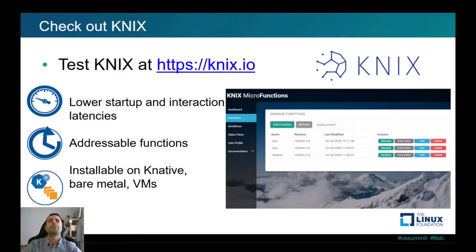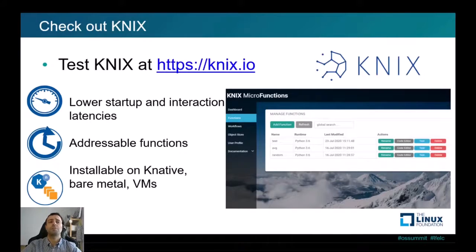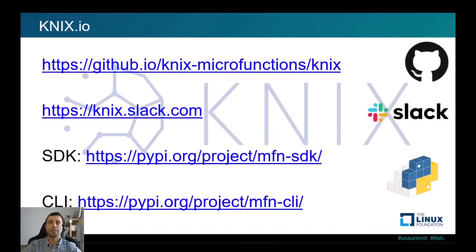You can also try KNX for yourselves. We have a test system running at KNIX.io incorporating the ideas presented in this talk to achieve lower startup and interaction latencies, as well as addressable function executions. You can also install KNIX on your own infrastructure — we have Helm charts for Kubernetes with KNative, or Ansible scripts for bare metal or VM clusters. All the code is available at GitHub with installation instructions, we have a Slack channel to learn more or get help, and the SDK and command line tool are available at PyPy.